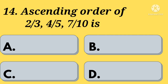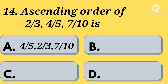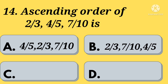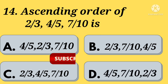Ascending order of 2 by 3, 4 by 5, 7 by 10 — Option A: 4 by 5, 2 by 3, 7 by 10. Option B: 2 by 3, 7 by 10, 4 by 5. Option C: 2 by 3, 4 by 5, 7 by 10. Option D: 4 by 5, 7 by 10, 2 by 3. Your time starts now.